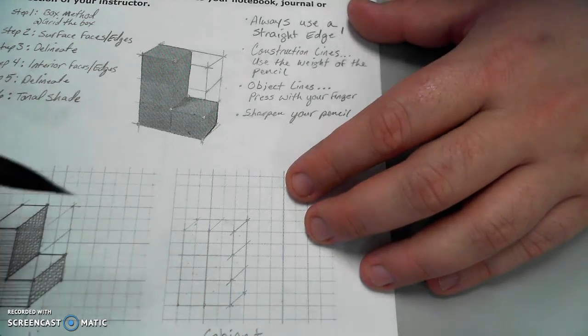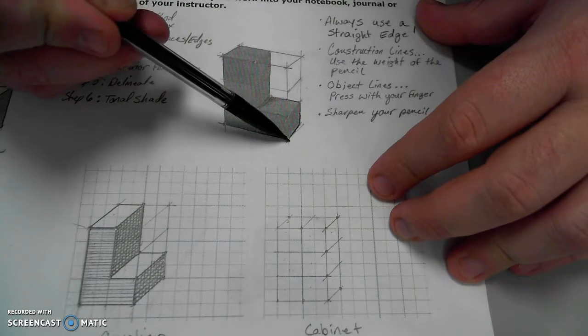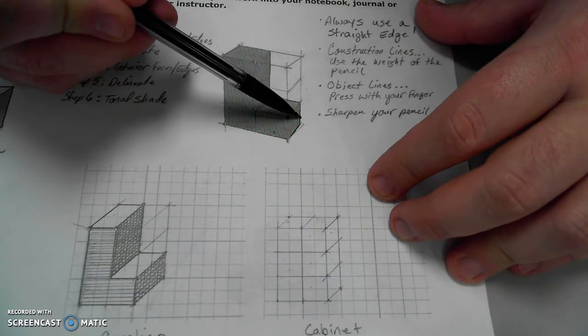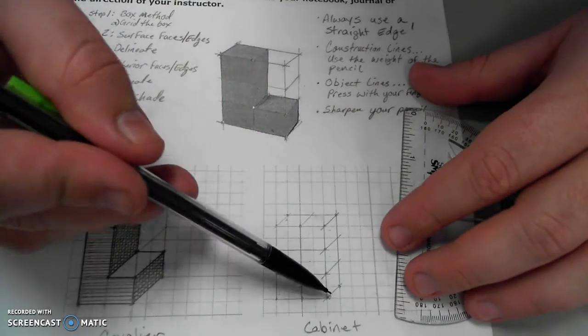Those would be all of my units. Remember, I had two in width, one in depth, three in height, two in width, one in depth.